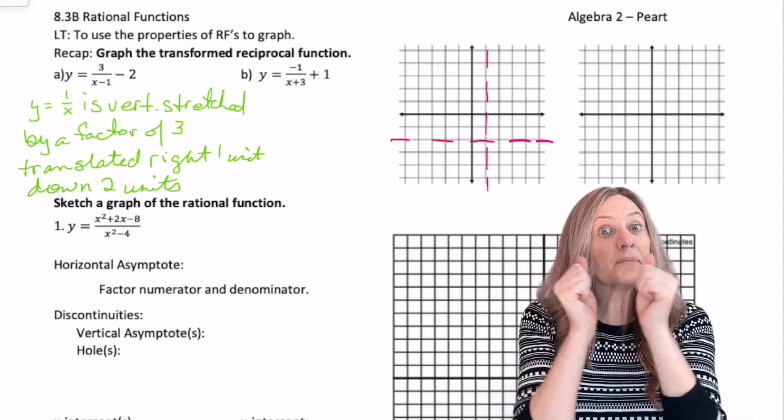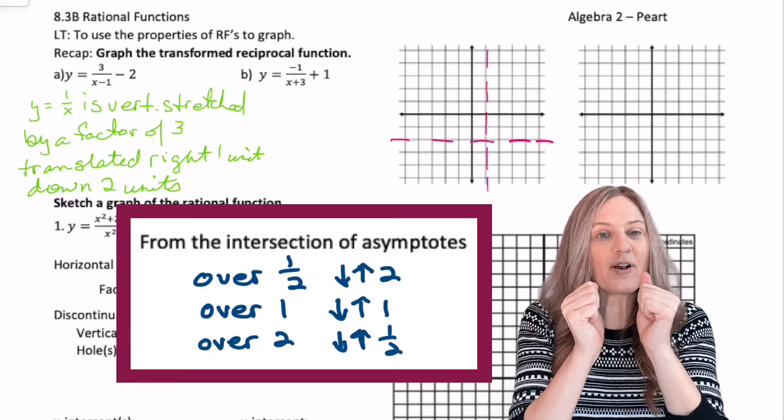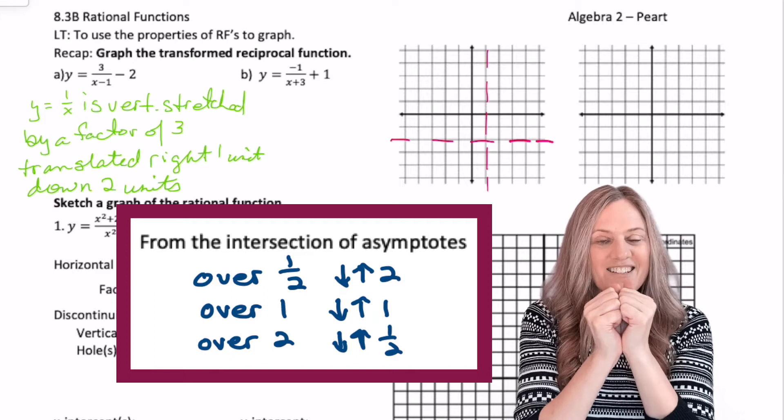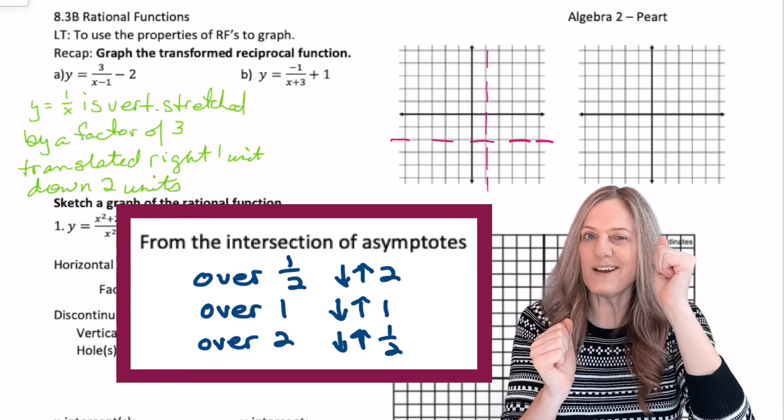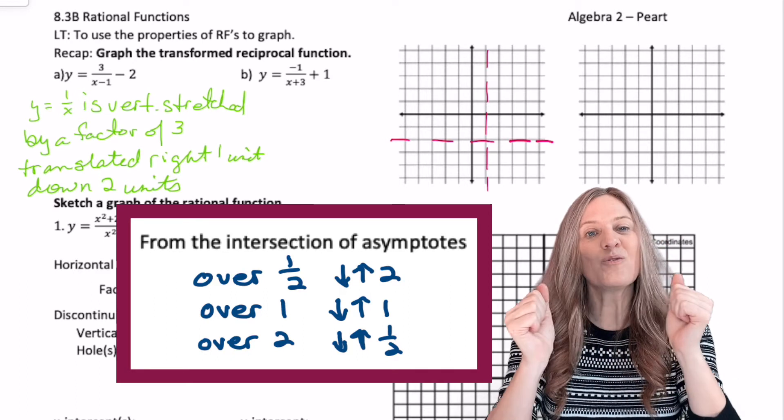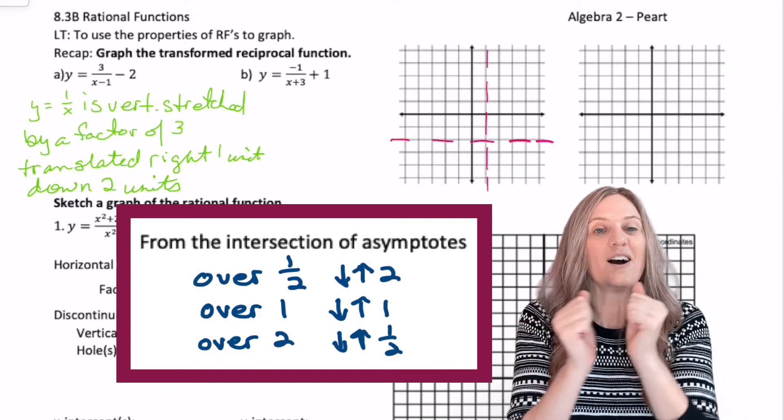Let's review our pattern points. From the intersection of the asymptotes, over a half, up two, down two, back to the intersection, over one, up one, down one, back to the intersection, over two, up half, down a half. All right.